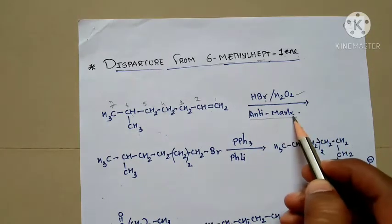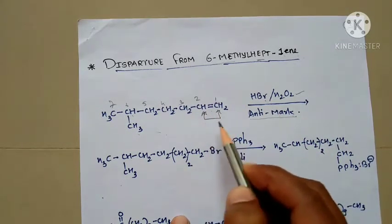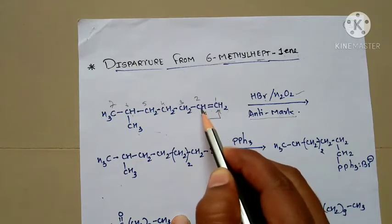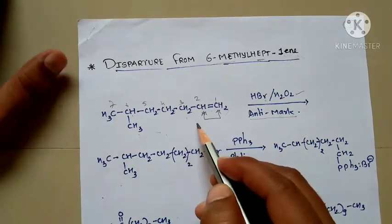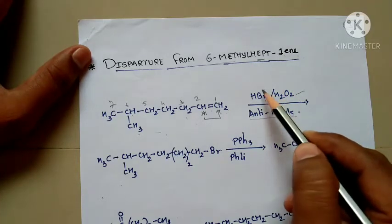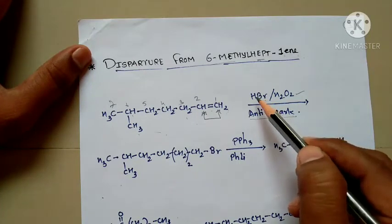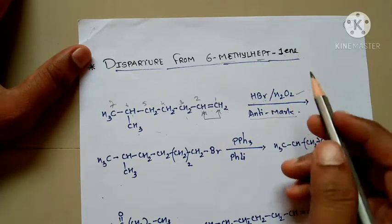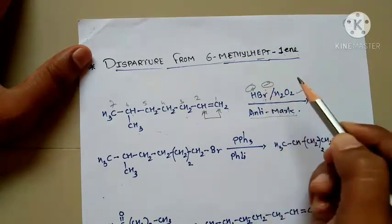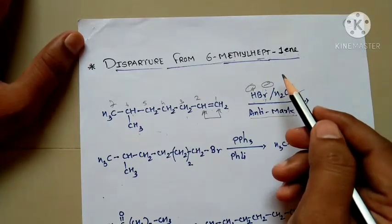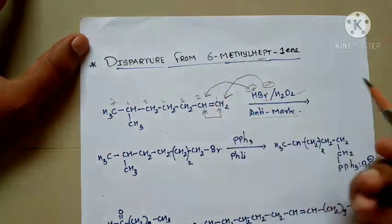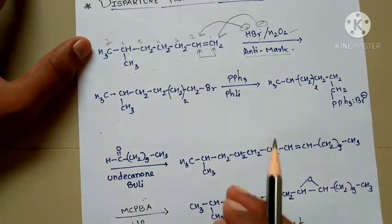What is anti-Markovnikov's rule? This is an unsymmetrical alkene because adjacent carbons have a different number of hydrogens — the first carbon has two hydrogens, the second has one hydrogen and an alkyl group. When an unsymmetrical alkene reacts with an unsymmetrical reagent (HBr — H is positive, Br is negative), the negative part of the reagent is added to the carbon with the higher number of hydrogens. So Br goes to the first carbon and H goes to the second carbon.